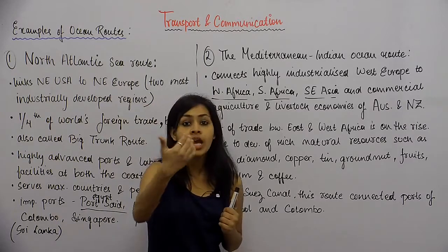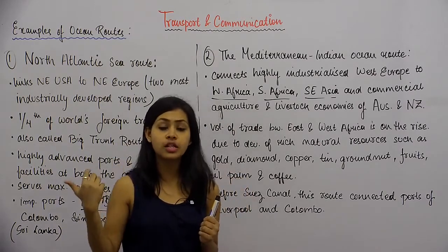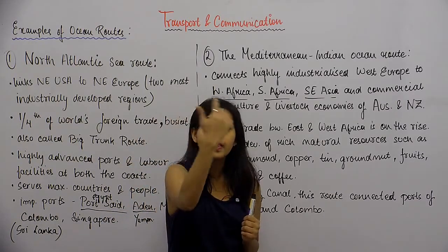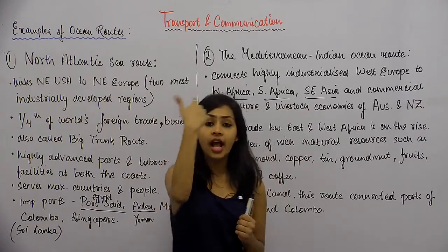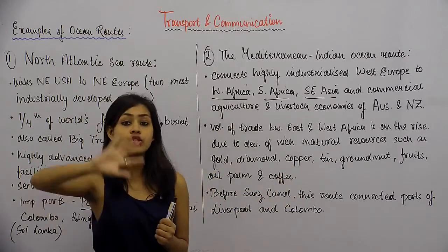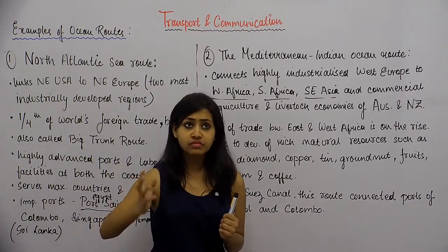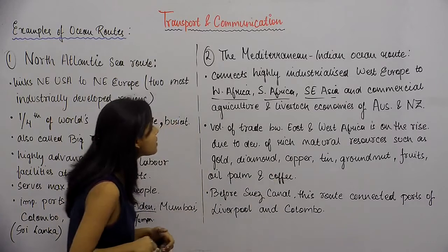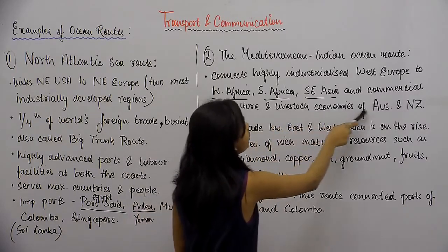Before the development of the Suez Canal, if you wanted to trade with West European countries, this route came via the Atlantic Ocean, around the bottom of Africa, and then reached Southeast Asia — countries like the Philippines and other Southeast Asian nations — and also the commercial agriculture and livestock economies of Australia and New Zealand.